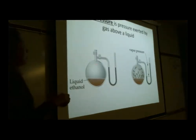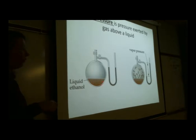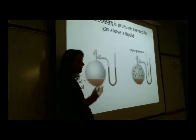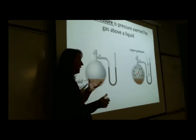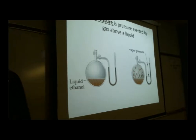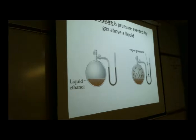Vapor pressure is the pressure exerted by the gas from a liquid that is evaporating. If you have ethanol or water in a flask, some of it is evaporating, and that gas above the liquid creates vapor pressure. In a closed bottle, you could actually measure that vapor pressure. Note that for a solution like sugar water, only the water evaporates — the dissolved sugar does not vaporize.